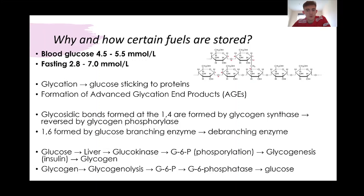If we talk about blood glucose in more detail and why it's important and how it's stored: the blood glucose concentration is about 4.5 to 5.5 mmol/L, and at fasting that can range between 2.8 and 7. However, in conditions such as diabetes, when glucose gets too high, we get glycation occurring where glucose starts to stick to proteins, and this formation of advanced glycation end products basically causes proteins to change shape and stop working. The blood also becomes very viscous, meaning it takes the heart more energy to pump it around.